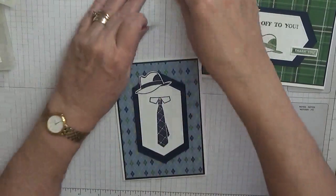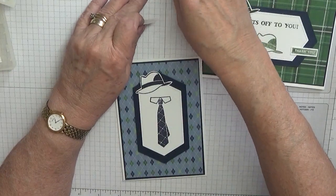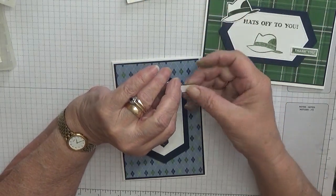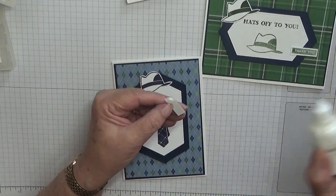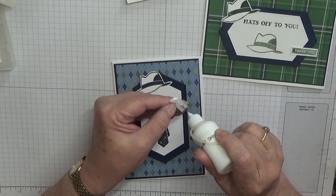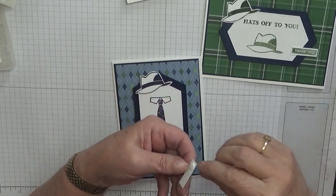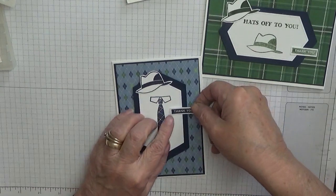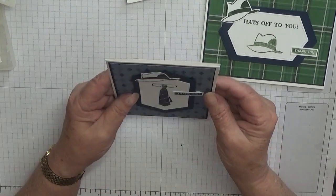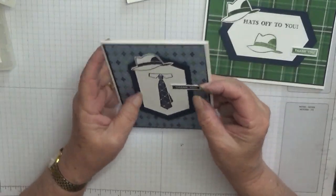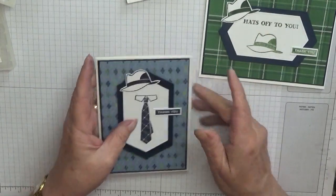This one we'll do the same, just put a tiny dimensional at the end, take it off, and glue that on straight. There we are.